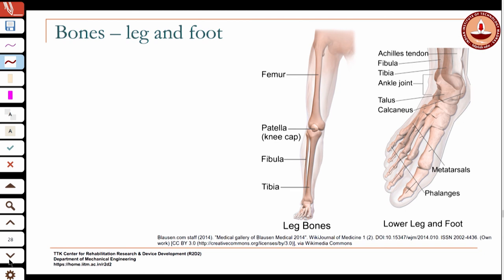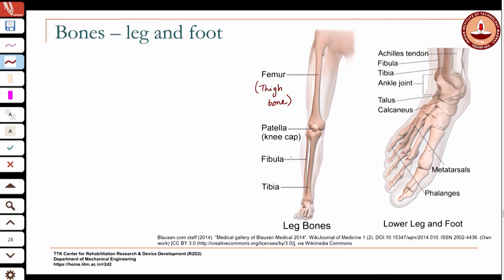The important bones in the lower limb are the femur or thigh bone, then the knee cap or patella, then the tibia. The knee joint is formed only by the articulation between the femur and the tibia. The fibula does not participate in forming the knee joint — it runs parallel to the tibia in the lower leg, but at the bottom it participates in forming the ankle joint with the talus bone. The fibula is necessary for stability at the ankle.